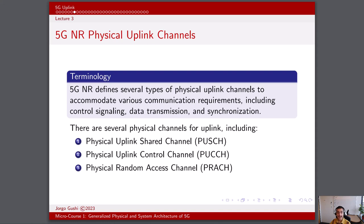The network dynamically schedules the use of uplink resources, optimizing the allocation of time and frequency slots to different user devices based on their channel conditions and traffic demands. 5G NR allows for flexible sub-carrier spacing, enabling efficient use of the available spectrum and accommodating different deployment scenarios. 5G NR uplink channels utilize high-order modulation schemes and adaptive coding to achieve higher data rates while maintaining reliable communication.